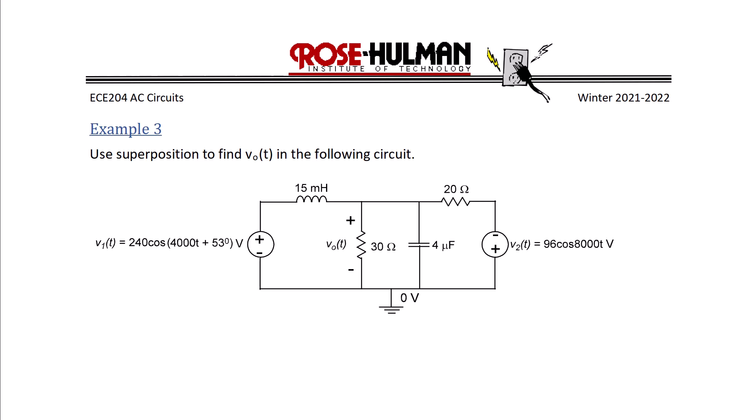Our final example is shown here. Example 3, use superposition to find V naught of T in the following circuit. So here we see that we have a circuit that is defined in the time domain with two different sources. On the left we have 240 cosine 4000 T plus 53 degrees, so omega is equal to 4000 radians per second. On the right we have a voltage source V2 of T equals 96 cosine 8000 T, so omega is equal to 8000 radians per second.